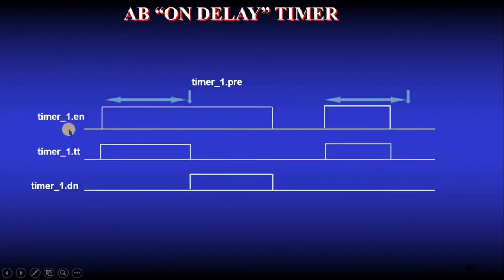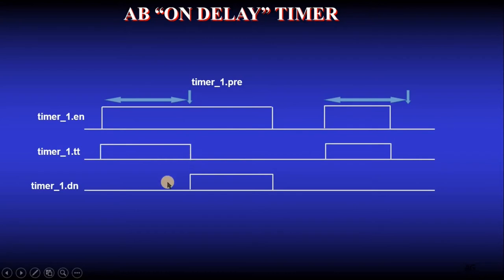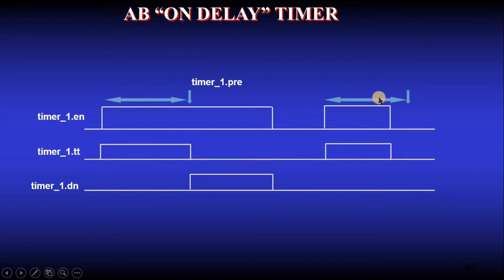With the rising edge of the enable signal you start timing. When you reach the preset value, the TT bit goes off but the Done signal turns on and stays on until the enable signal goes off. If the enable signal is active for less time than the preset value, the TT bit simply follows that signal only.